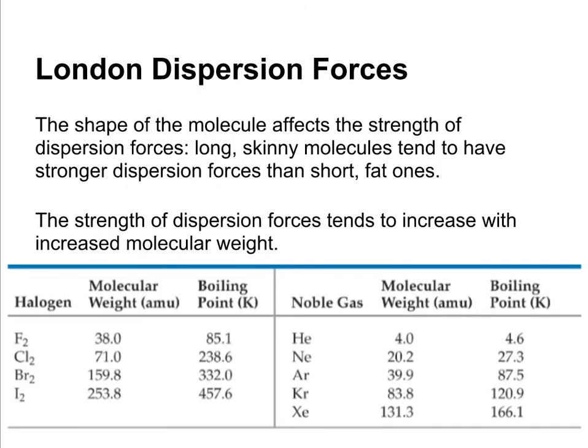The shape of the molecule affects the strength of London dispersion forces. Long skinny molecules are going to have stronger dispersion forces than short fat ones because of their increased surface area. In a long molecule, the electrons can get farther to one side to create a greater instantaneous dipole than in a short fat molecule. The strength of London dispersion forces also tends to increase with molecular weight, because the bigger the atoms, the more electrons you have, and the more polarizable the electron cloud is going to be.